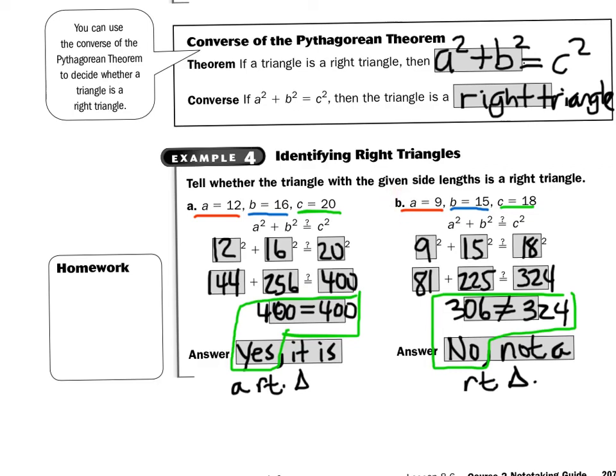Take a look at B. They want us to use 9 for A, 15 for B, and 18 for C. So always start off with A squared plus B squared equals C squared. I plug in the 9 for A, the 15 for B, and the 18 for C.